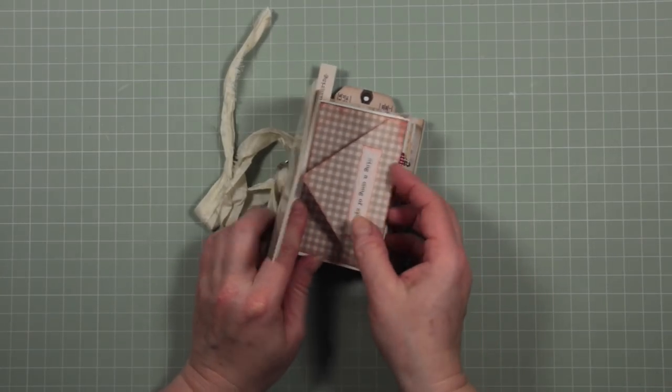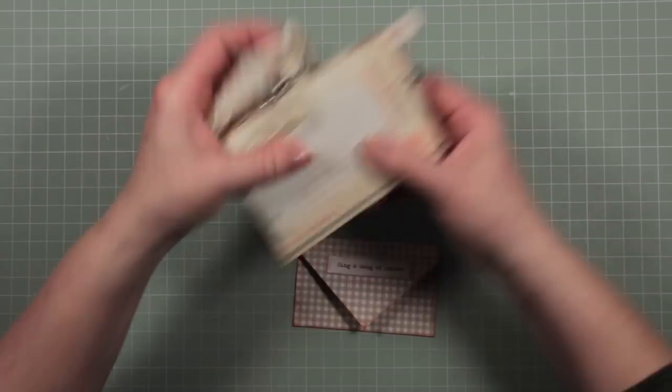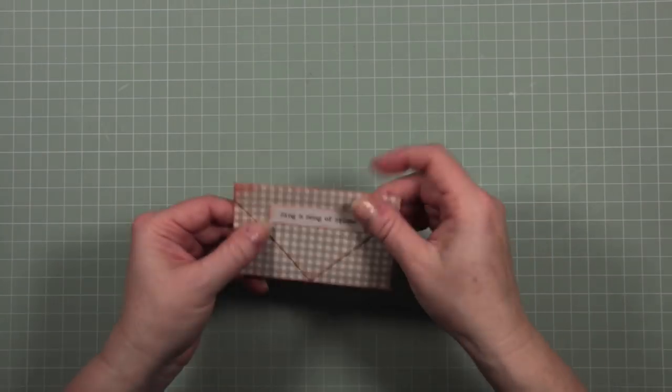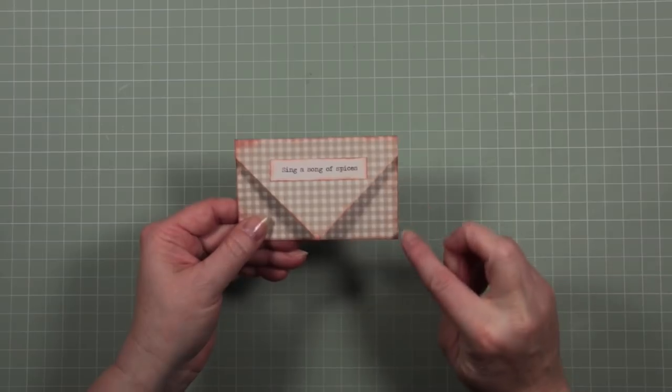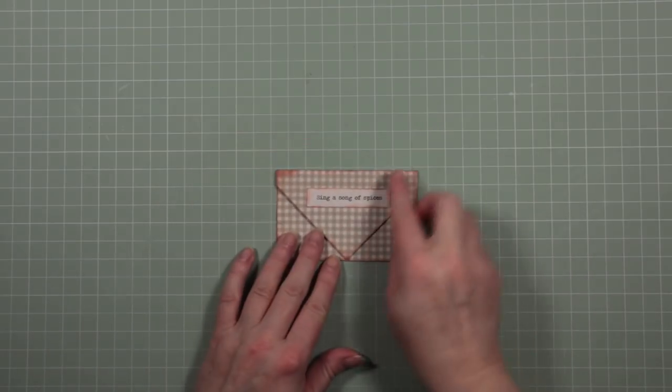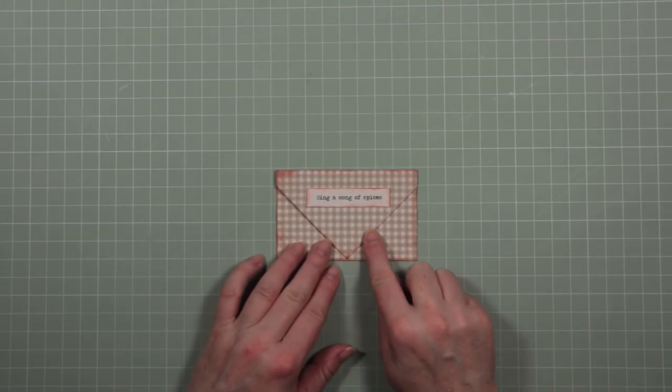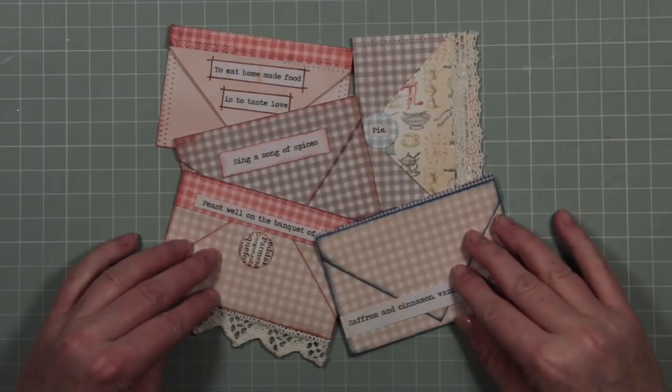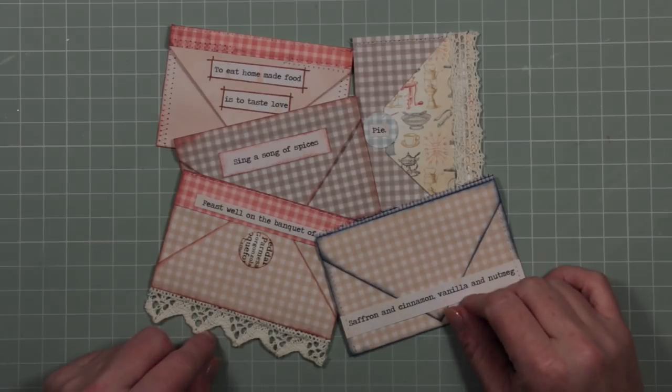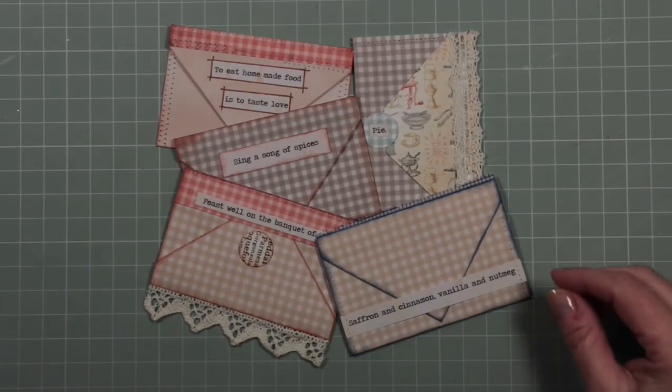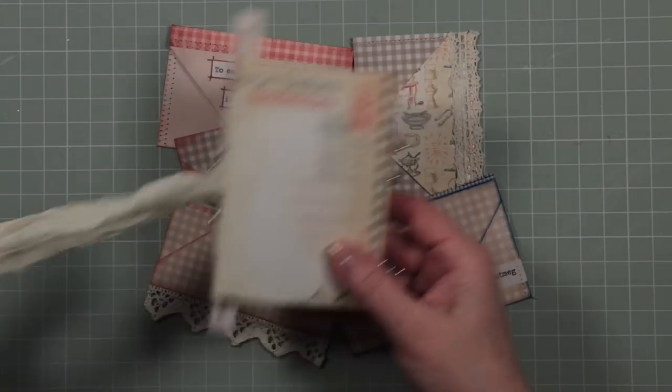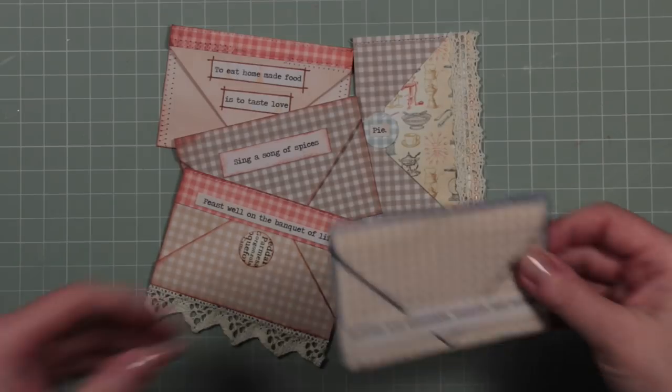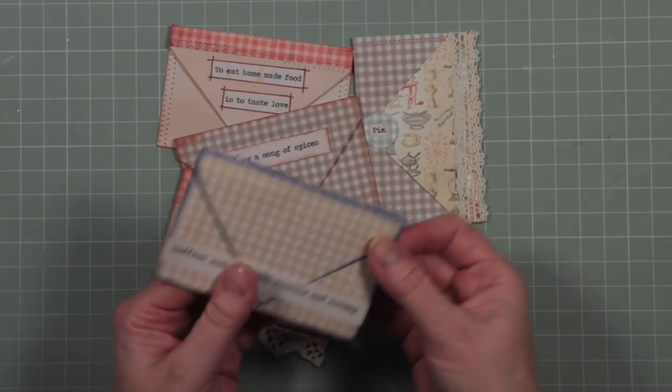I'm going to make—that's the basic envelope. I'm going to make a few more with some variation. I'm going to do some with stitching, some with more complex use of those printed words, and I'll show you the selection. Here is my finished collection of envelopes ready to put into my little mini journal.